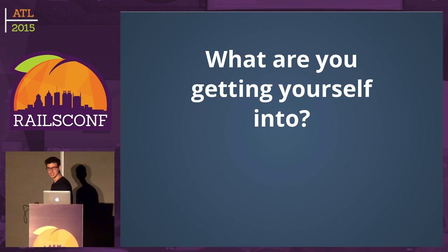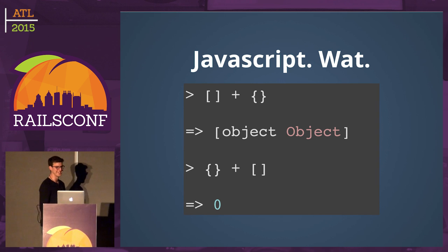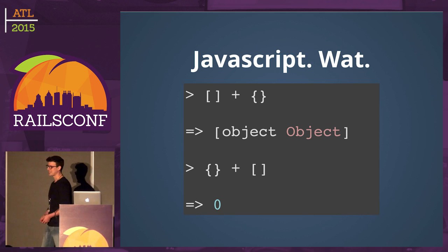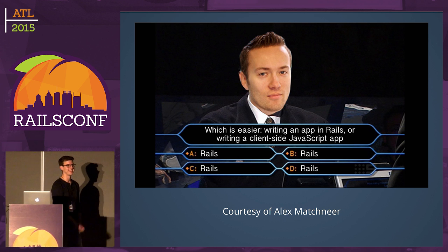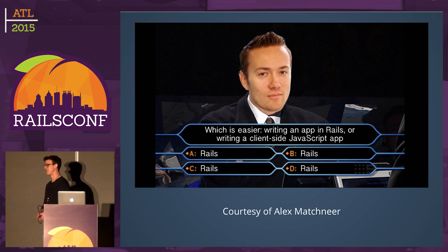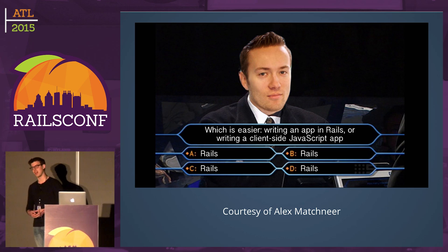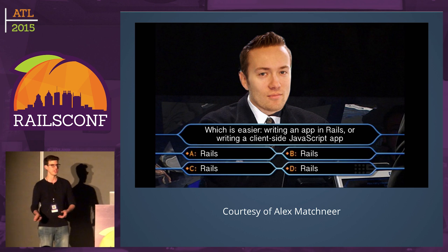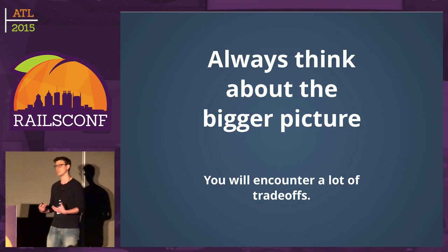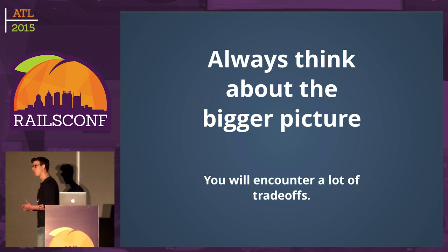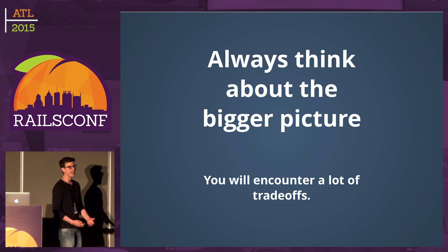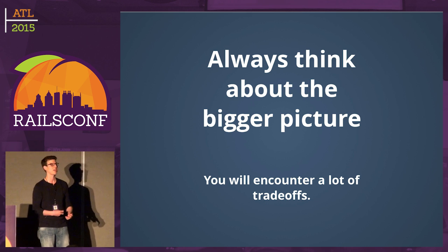What are you getting yourself into? JavaScript is often messy — nobody will say it is a beautiful, coherent language. It's gotten a little better with new syntax, but you'll still run into difficulties. It is generally easier, especially in the beginning, to write an app in Rails with HTML being served up instead of a client-side JavaScript MVC framework. It's important to always think about the bigger picture and understand the technical challenges before diving into implementation.